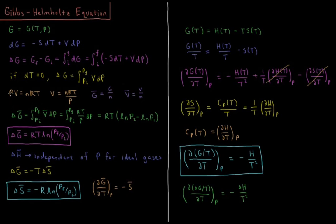For an ideal gas, PV equals NRT, so the volume of an ideal gas is NRT over P. The molar Gibbs energy is the Gibbs energy divided by the number of moles, and the molar volume is the volume divided by the number of moles. So the change in molar Gibbs energy during some change in pressure is equal to the integral from the initial to final pressure of the molar volume with respect to pressure, which is the integral of RT over P, giving RT times the natural log of P2 minus the natural log of P1, because the integral of dP over P is the natural log of P.